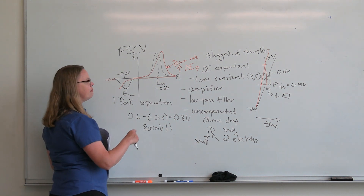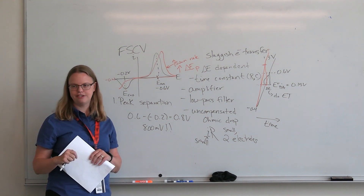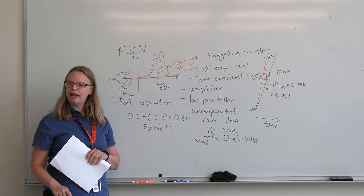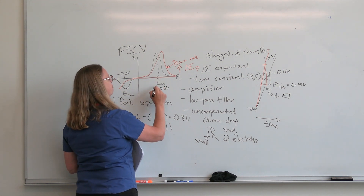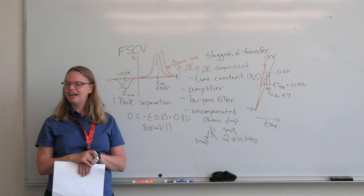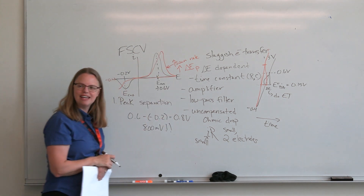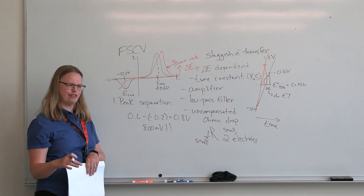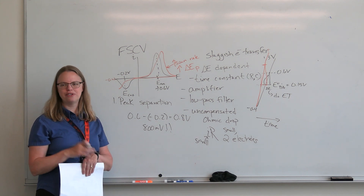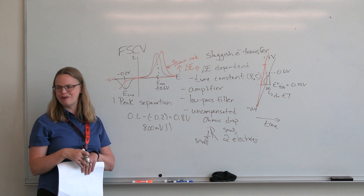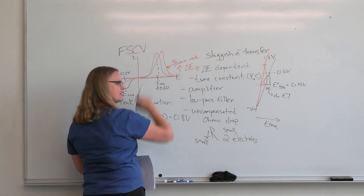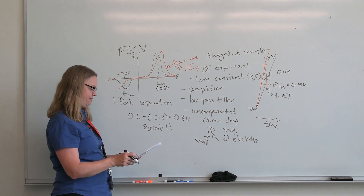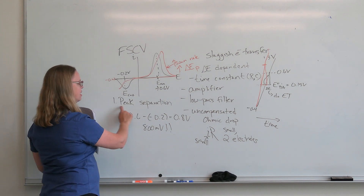If you think about amperometry — where they just hold at a constant potential — most amperometry experiments for dopamine at single cells have been done at 0.6V. They picked 0.6V right off the FSCV peak. That's a problematic way to pick your amperometry potential because the peaks are shifted in FSCV. You can hold at 0.2 or 0.3V and see the same amperometry results for dopamine. You should pick your amperometry potential off of slow-scan CV, not fast-scan CV.